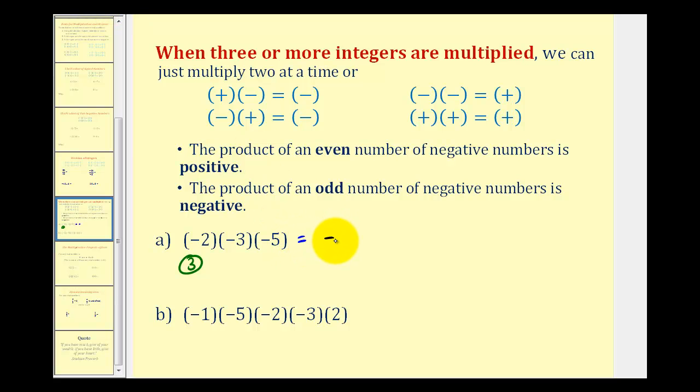Once we know the product is negative, we can ignore the signs and just multiply their absolute values. So we'd have two times three, which is six, times five, which is thirty. But we know the product is negative, so the product is negative thirty.